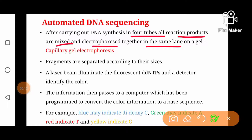After carrying out DNA synthesis in the four tubes, all reaction products are mixed and electrophoresed together in the same lane. This type of gel electrophoresis is known as capillary gel electrophoresis, because a very narrow capillary tube is used for separation of DNA fragments. The fragments are separated according to their sizes — smaller fragments migrate toward the positive pole, while larger fragments stay behind toward the negative pole.